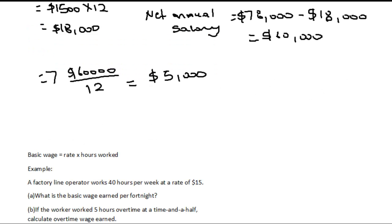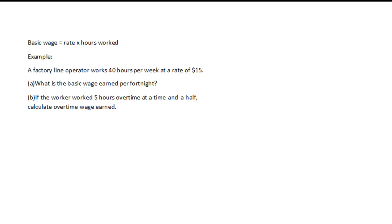Let's look at wages. The difference between wage and salary is that a wage is a fixed hourly rate. To determine the wage that an employee receives, we know the fixed hourly rate and multiply it by the hours worked. The basic wage equals the hourly rate times the hours worked. For example: a factory line operator works 40 hours per week at a rate of $15. What is the basic wage earned per fortnight?